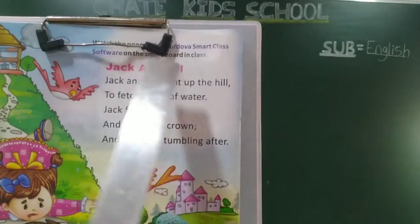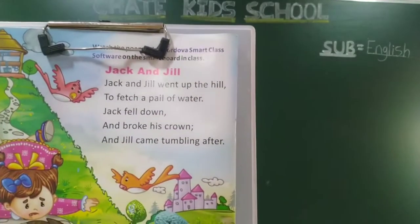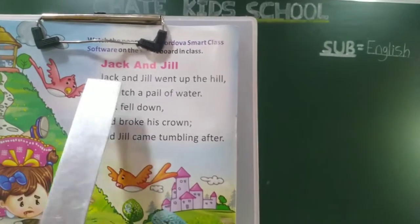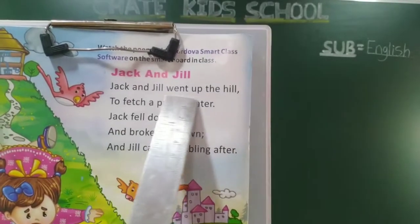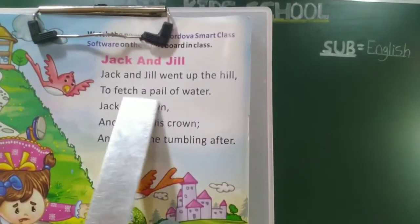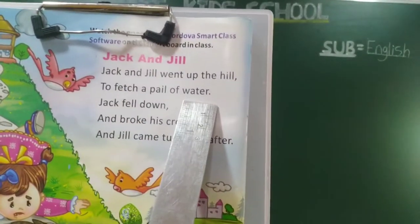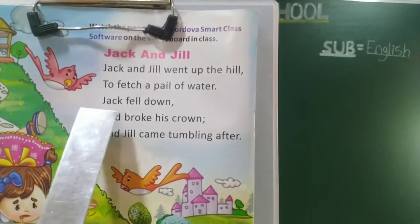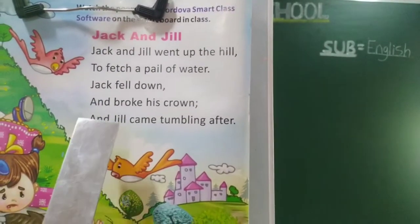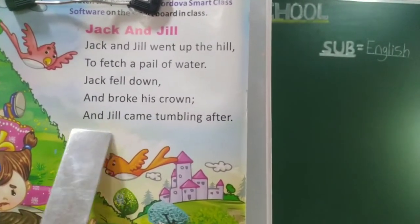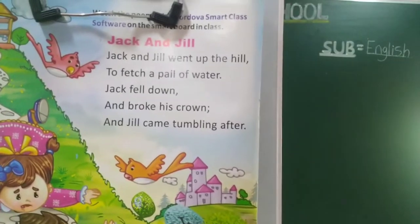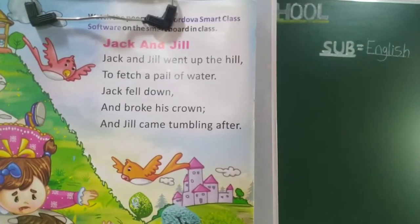Jack and Jill — aapan one second he poem read kariya. Jack and Jill went up the hill to fetch a pail of water. Jack fell down and broke his crown, and Jill came tumbling after.